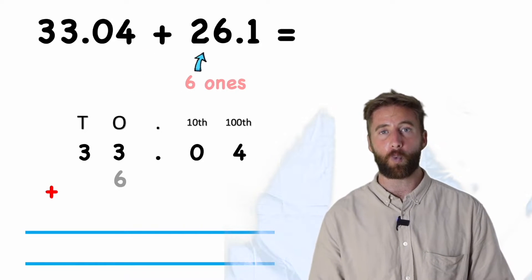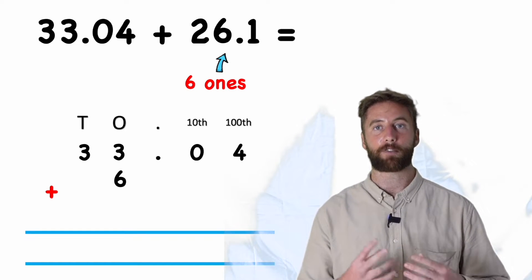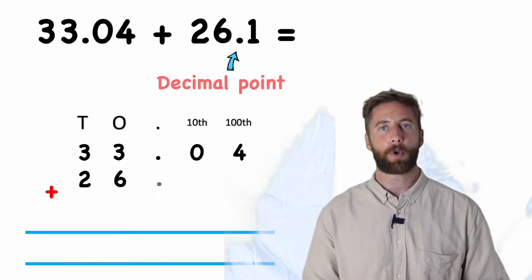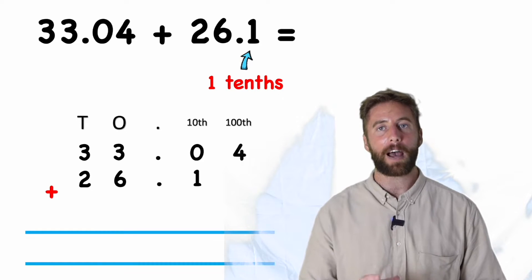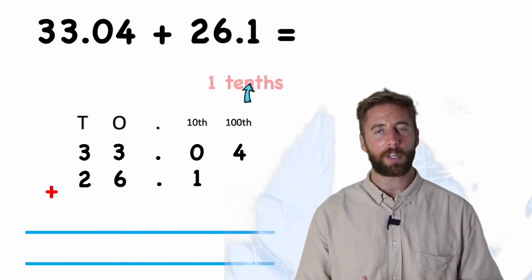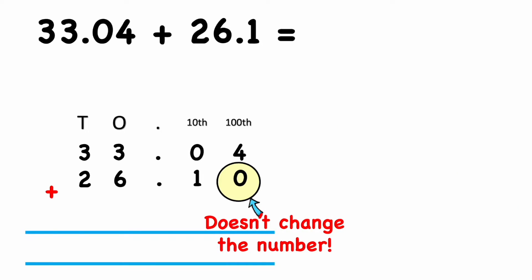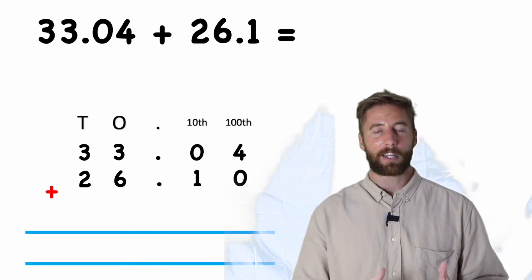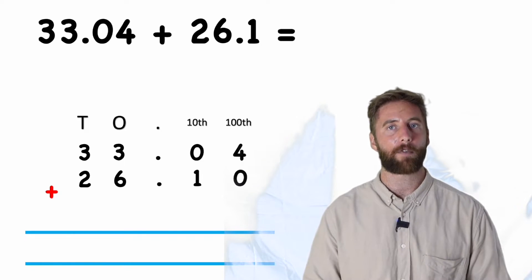Now I'm ready to put in twenty-six point one. I've got six ones, two tens, then I put the decimal point in, and I have one tenth. But now I have a gap — what could I put there? That's right, a placeholder. I'm going to put this placeholder in. It does not change the value of this number. Twenty-six point one is the same as saying twenty-six point one zero, or twenty-six point one zero zero zero forever — it doesn't change the value. Now I'm ready to begin.